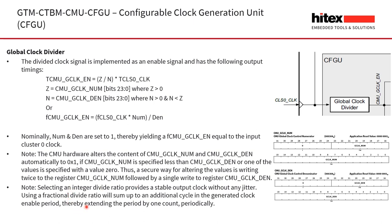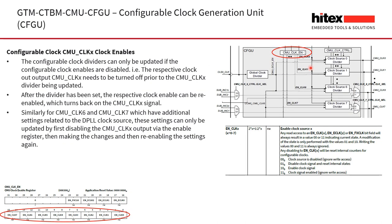Selecting an integer divider ratio provides a stable output clock without jitter. However, selecting a fractional divide ratio will sum up an additional cycle into the generated clock enable period, thereby extending the period by one count periodically. The configurable clock dividers can only be updated if the configurable clock enables are disabled. The respective output clock needs to be turned off prior to updating the CMU clock divider, and after the divider has been set, the clock enable signal can be turned back on. For clocks 6 and 7, changes must similarly be made by first disabling the CMU clock, making changes, then re-enabling.